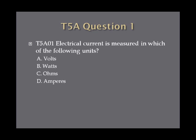Question 1: Electrical current is measured in which of the following units? A, volts; B, watts; C, ohms; or D, amperes. Question 2: Electrical power is measured in which of the following units? A, volts; B, watts; C, ohms; or D, amperes.